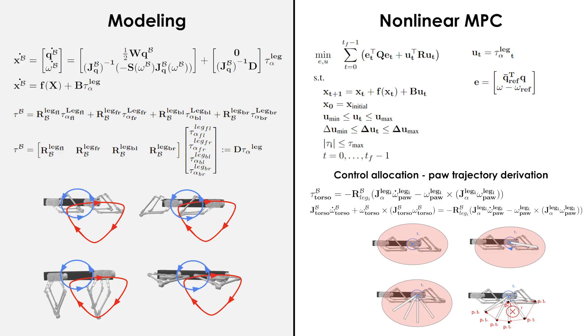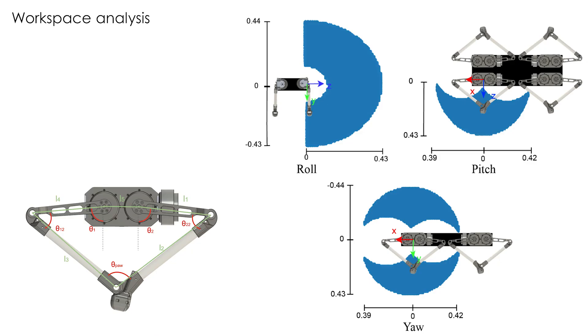In light of this, a control allocation process is derived that allows calculation of the paw trajectories for desired torques against the robot's torso.